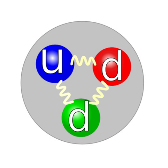The neutron is classified as a hadron, because it is a composite particle made of quarks. The neutron is also classified as a baryon, because it is composed of three valence quarks.